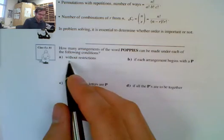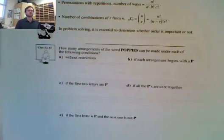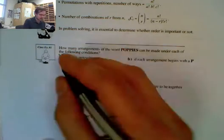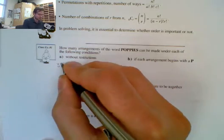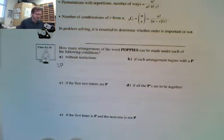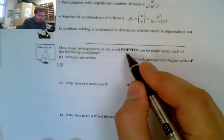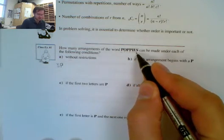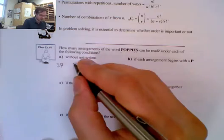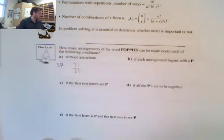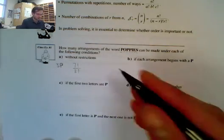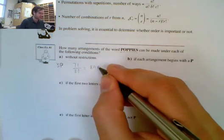Let's take a look at the first question. We have the word poppies and we want to know how many arrangements there could be of the word poppies. First we're going to look at it without any restrictions. We have three P's that are being repeated. We have a total of 7 letters, so that's 7 factorial all over 3 factorial, which gives me 840.